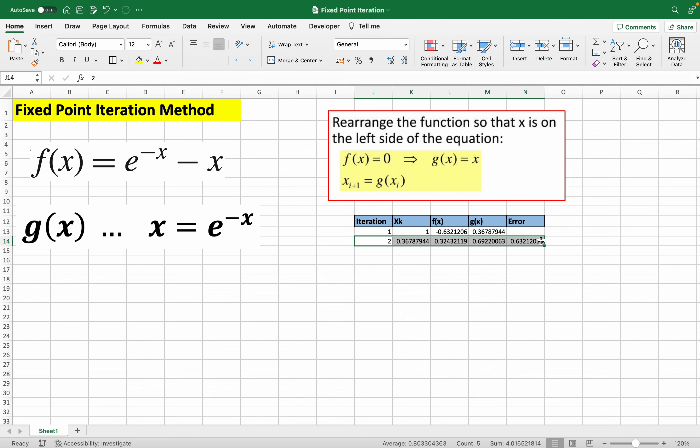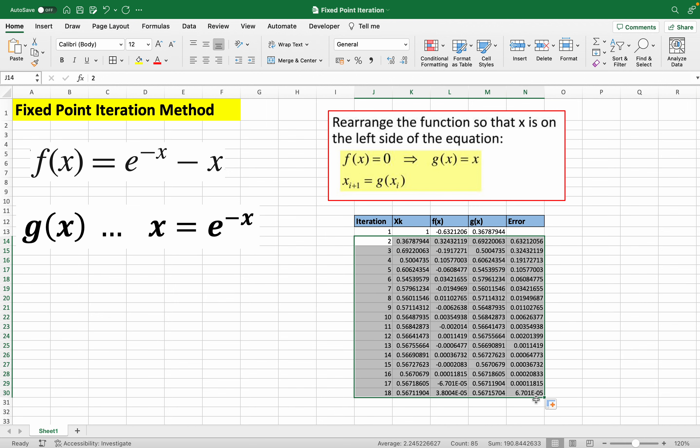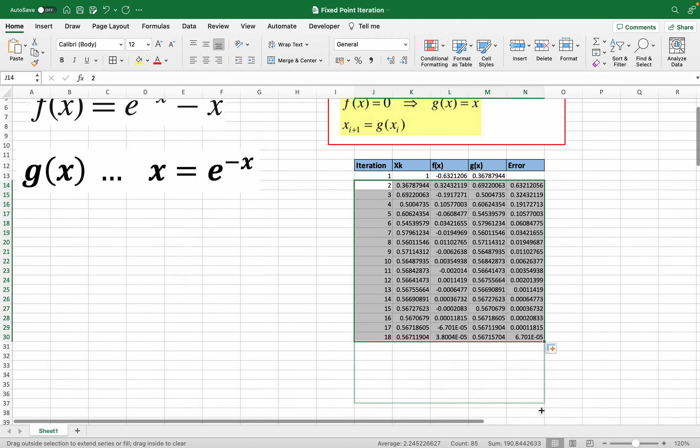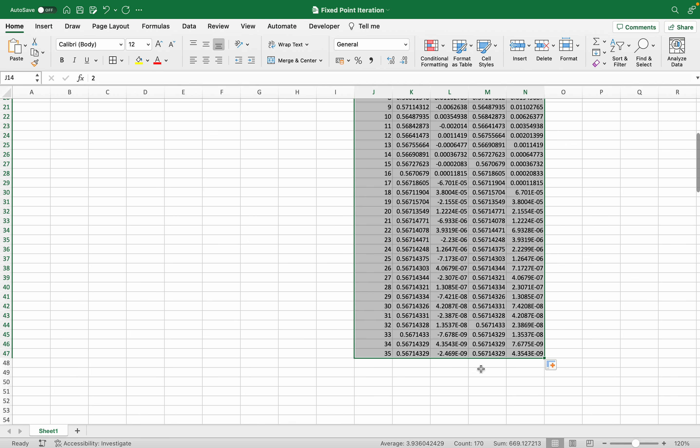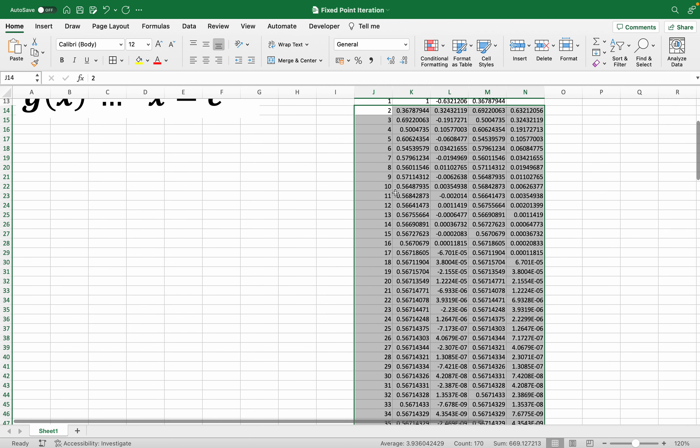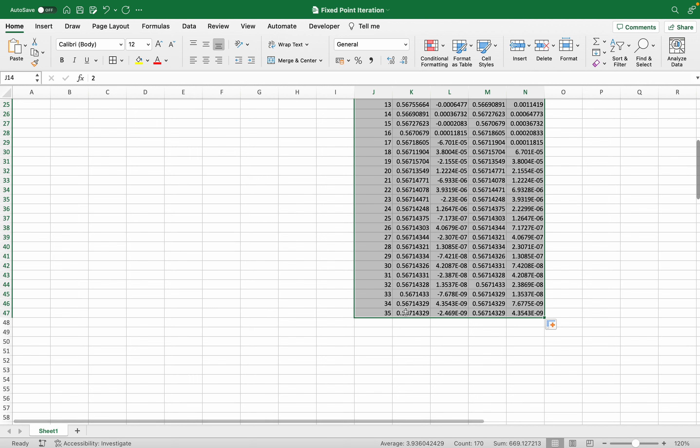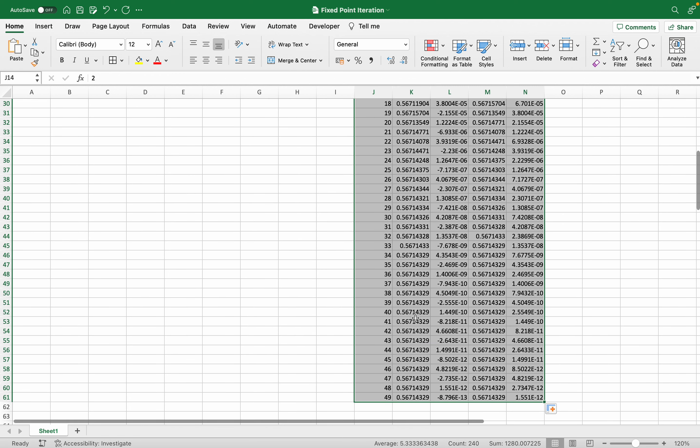We just have to drag this down until we meet a certain error criteria, where the error is low enough that we can accept the root value. You'll know when you've hit the root when the value for x stops changing. As you can see here, the numbers keep repeating: 5, 6, 7, 1, 4, 3, 2, 9 onward.